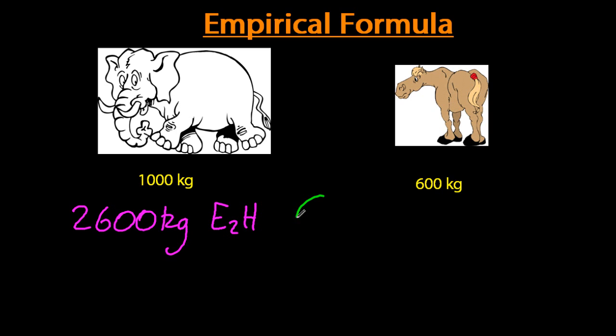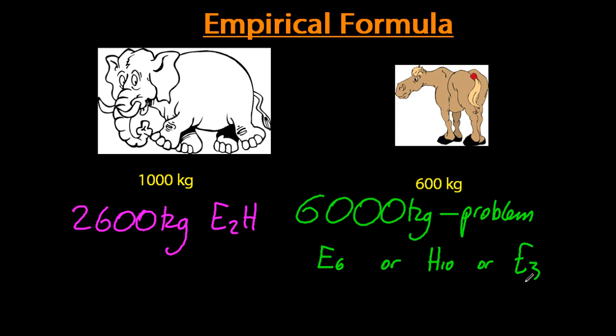But this is problematic. 6,000 kilograms, well that could be six elephants, could be ten horses, or it could be a combination. So we need more data to ascertain which of those three is correct.